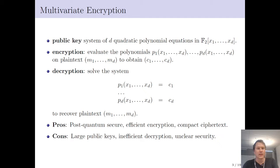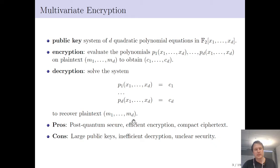First we'll introduce multivariate encryption schemes with a focus on the DUB encryption scheme. Typically you will have a system of quadratic polynomial equations, and we'll let the field be GF(2) in this case. To encrypt, you simply evaluate your polynomial system on the plaintext, which gives you the ciphertext. For decryption, you have to solve this resulting system, essentially inverting it to recover your plaintext. The benefits are post-quantum security, efficient encryption, and typically small ciphertexts.